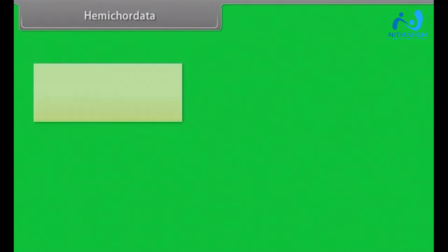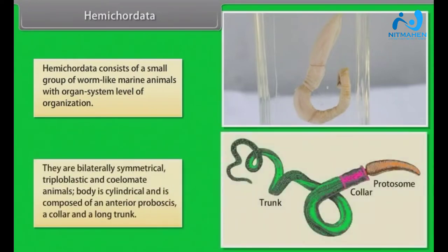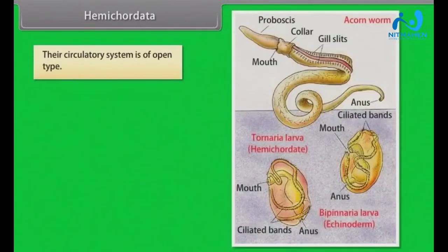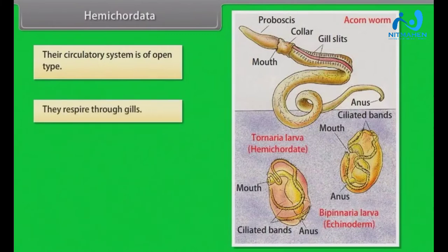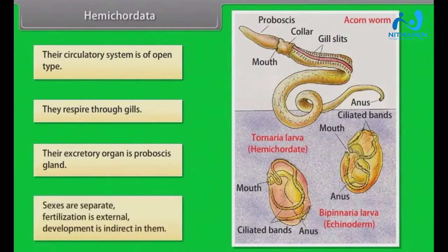Hemichordata consists of a small group of worm-like marine animals with organ system level of organization. They are bilaterally symmetrical, triploblastic and coelomate animals. Body is cylindrical and is composed of an anterior proboscis, a collar and a long trunk. Their circulatory system is of open type. They respire through gills. Their excretory organ is proboscis gland. Sexes are separate.